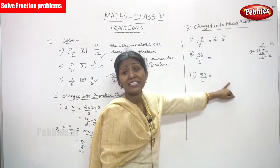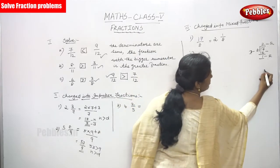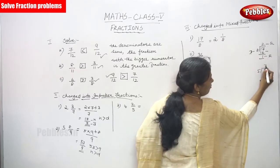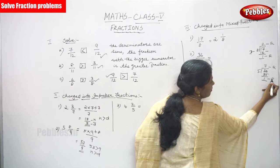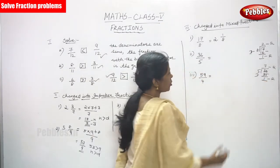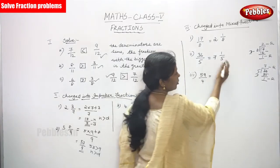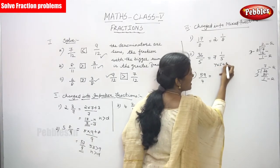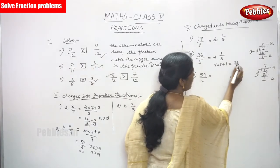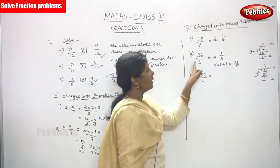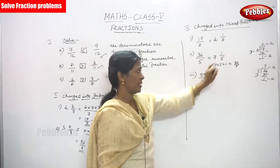Next: 36 divided by 5. Seven fives are 35, the remainder is 1. So the quotient is 7, the remainder is 1, and the divisor is 5. The answer is 7 and 1 by 5. Cross-checking: 7 into 5 plus 1 gives 35 plus 1 equals 36 by 5 — the same question confirms the answer. So 7 and 1 by 5 is the mixed fraction.